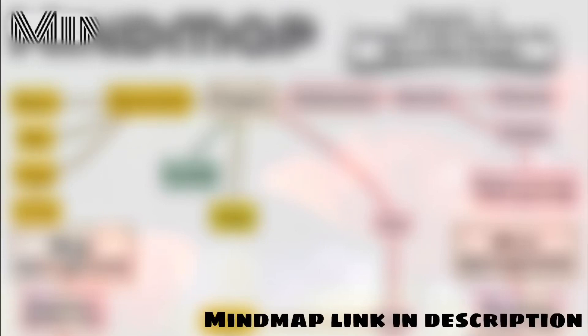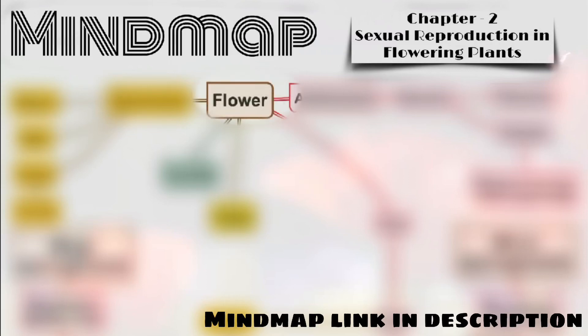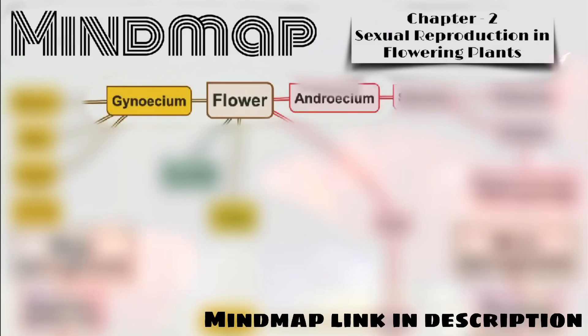Hello friends, we have started the mind map series and completed Chapter 1 - Reproduction in Organisms. This is the mind map of Chapter 2 - Sexual Reproduction in Flowering Plants of Class 12th. This mind map consists of three parts: flower, microsporogenesis and megasporogenesis, and double fertilization.